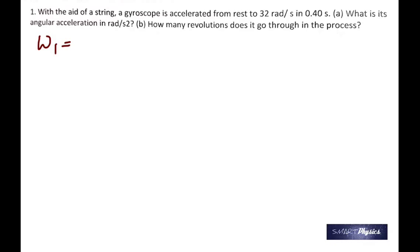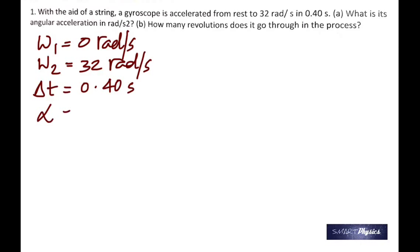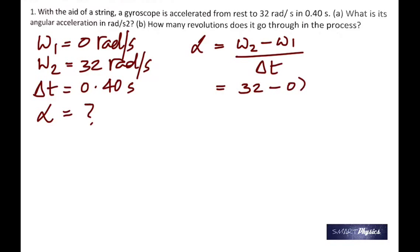So when it says initially at rest, you know its initial angular speed is 0 and its final is given as 32, and the time is there. To find the alpha, which is angular acceleration, use this formula: omega 2 minus omega 1 by delta t.